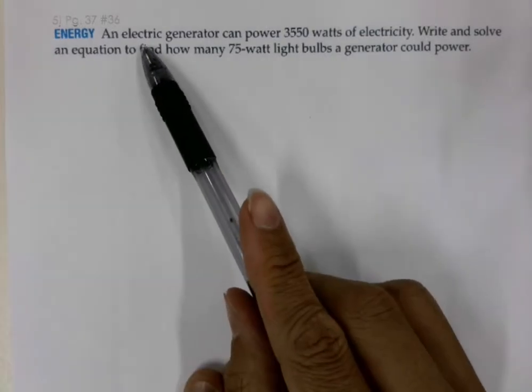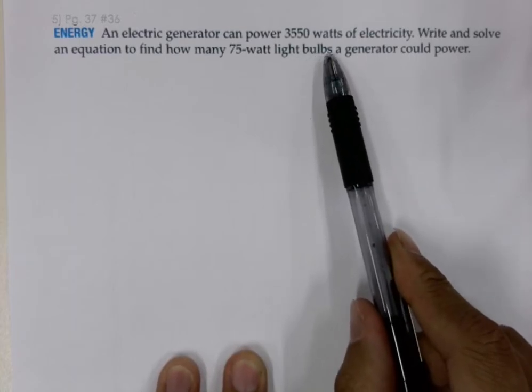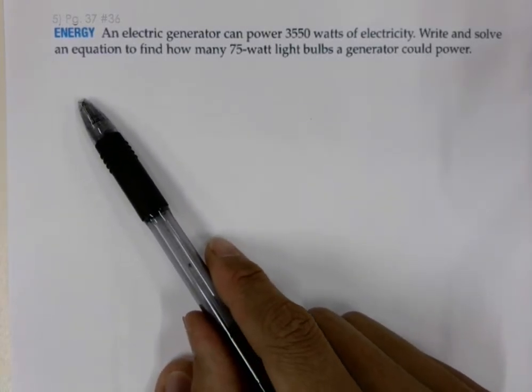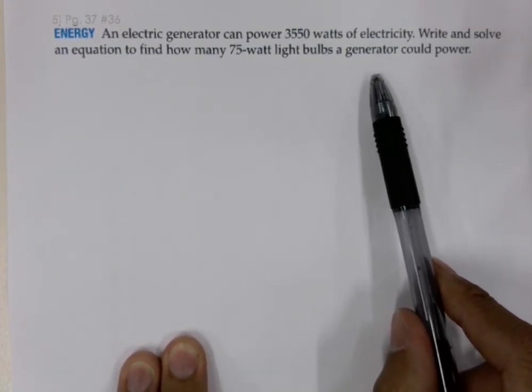An electric generator can power 3550 watts of electricity. Write and solve an equation to find how many 75-watt light bulbs a generator could power.